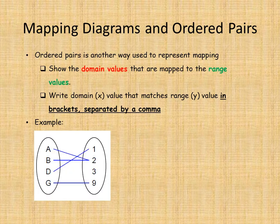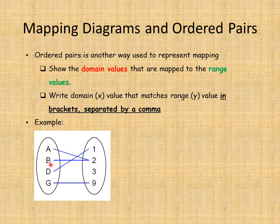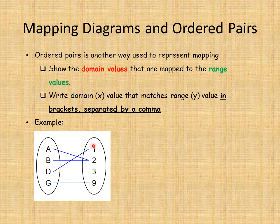Here's an example — we have a mapping diagram. What are the elements in the domain? Let's read them together: a, b, d, and g — so there are four elements in the domain. What are the elements in the range? One, two, three, and nine — so there are four values in the range.